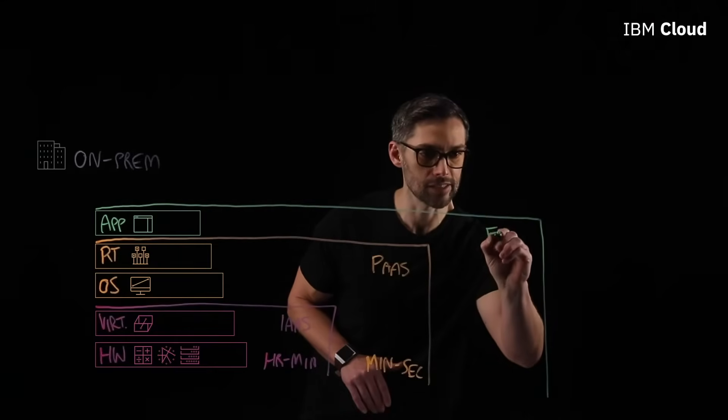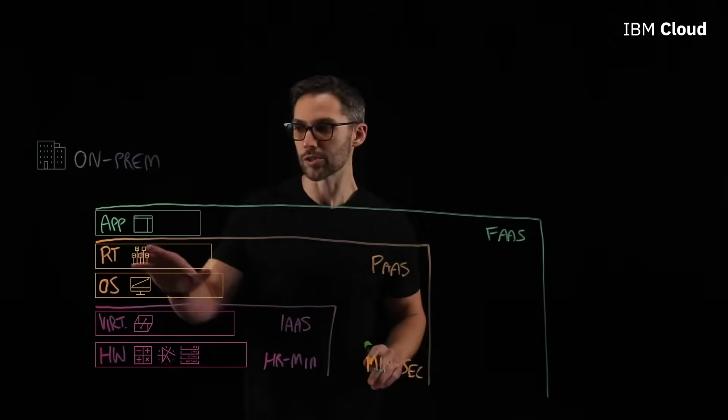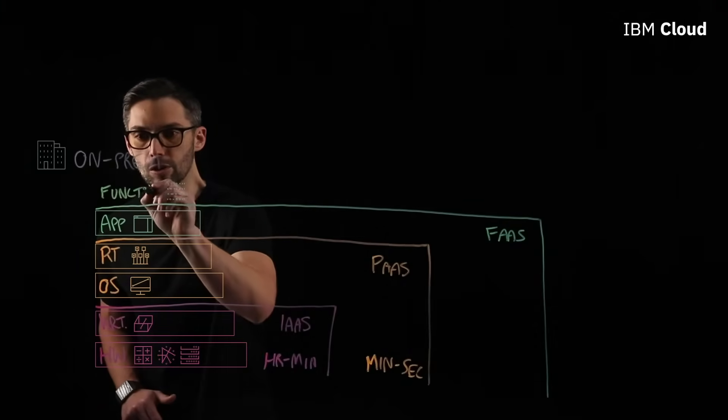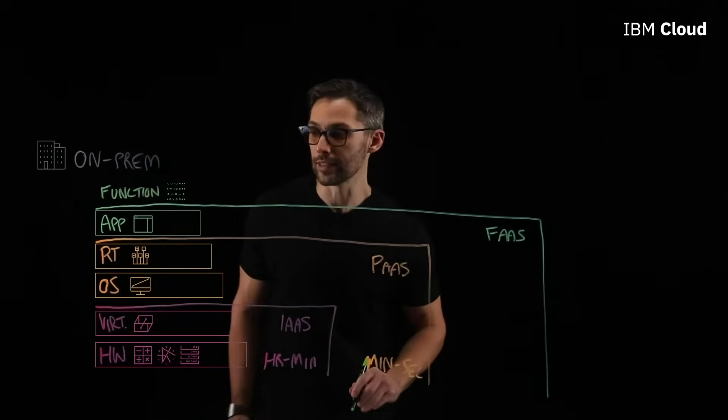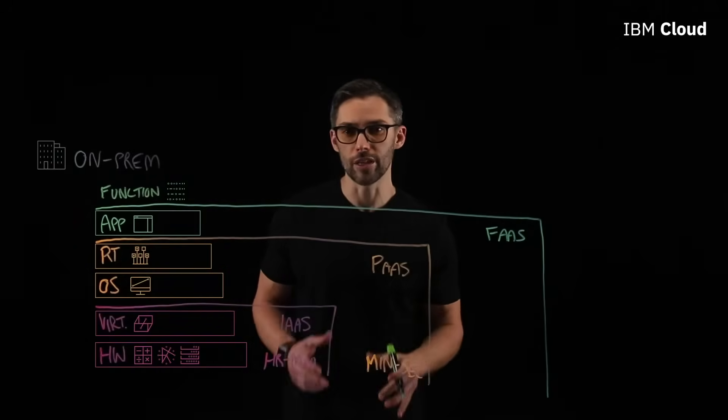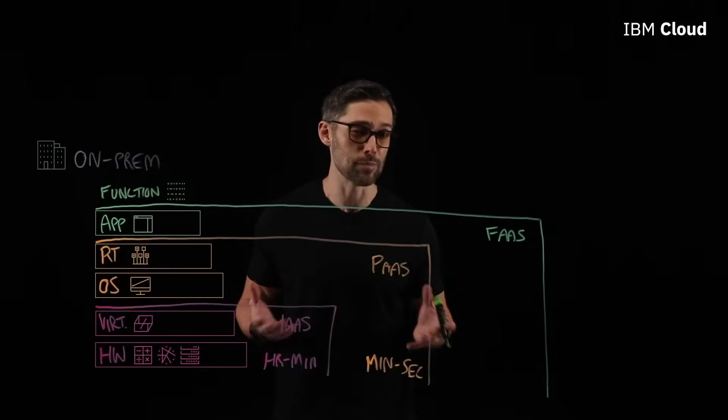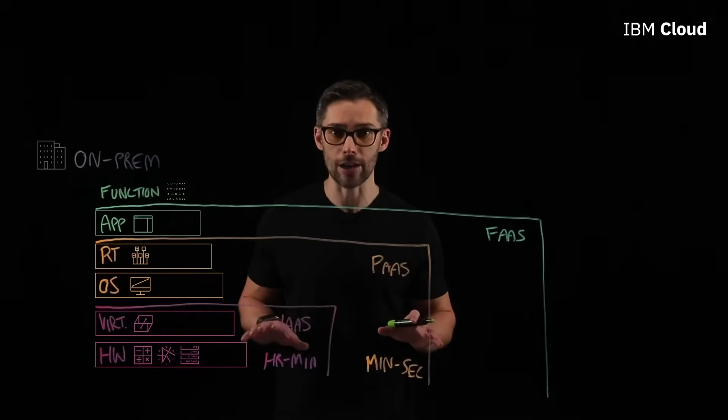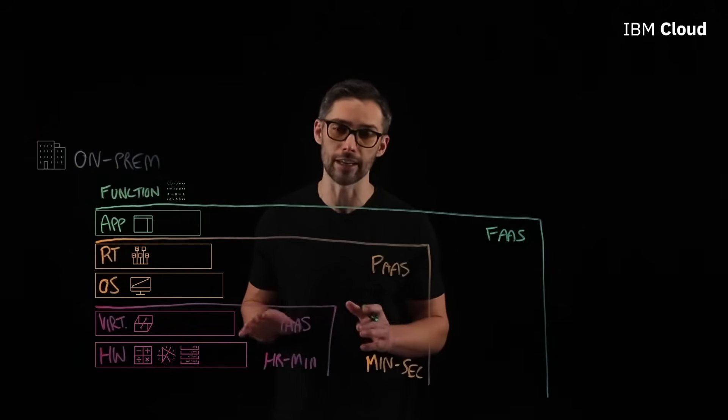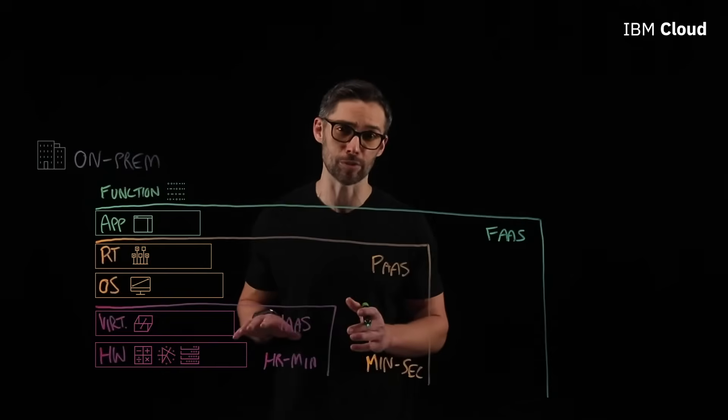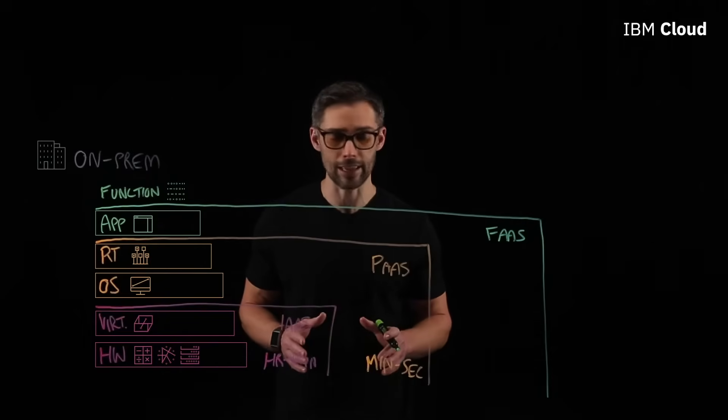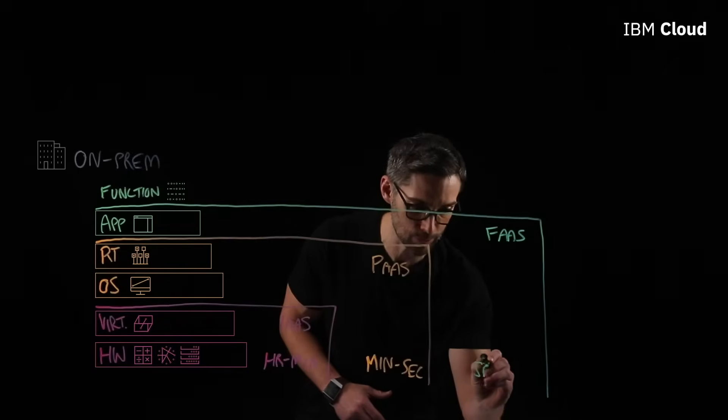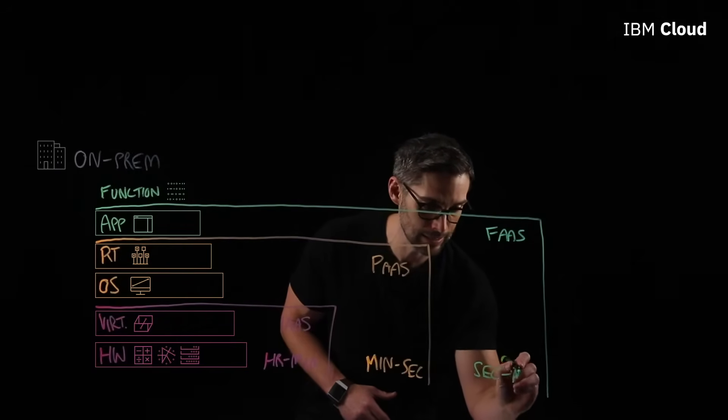And what FaaS does, it abstracts that application. So, now you can only focus on the functions. And the functions are the individual components that actually make up that application. So, it would be the individual tasks, you know, something like uploading an image file. You just have so much more flexibility. And you have zero idle time. So, you don't even need a server. That's all managed and taken care for you by the cloud service provider. It's much more cost effective. And the time provision with Function as Service is lightning fast. So, we're looking at anywhere from a second to millisecond.